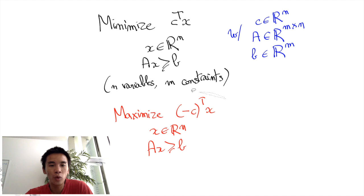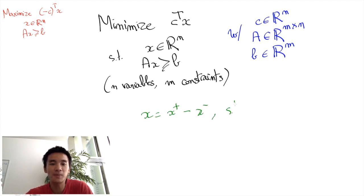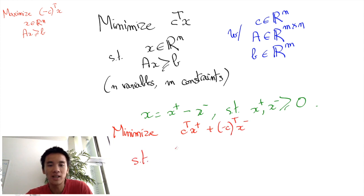Another useful way to write programs is by using non-negative decision variables. This can be easily derived by posing X equals X plus minus X minus, where X plus and X minus are non-negative. We obtain the following equivalent formulation: minimize C transpose X plus minus C transpose X minus, where X plus and X minus are non-negative, and where we have the inequalities AX plus minus AX minus greater or equal to B.